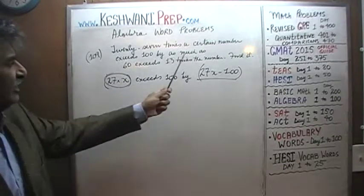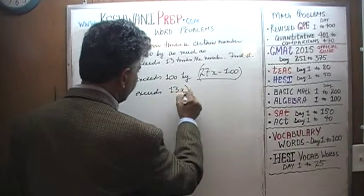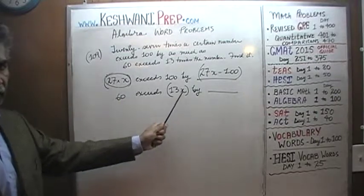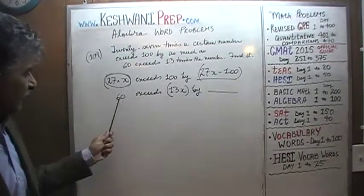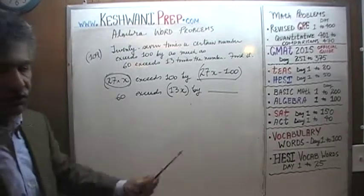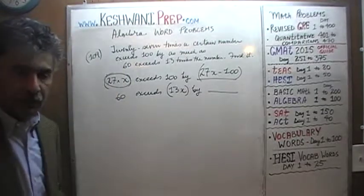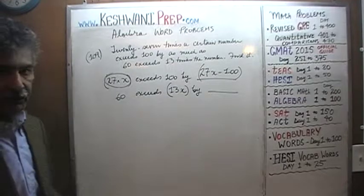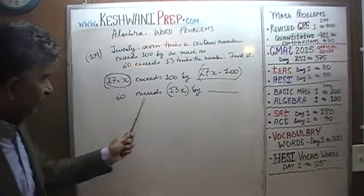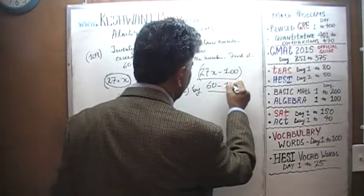The second part: 60 exceeds 13X. Think of 13X as a number less than 60. If 60 exceeds 57 by 3 — found by 60 minus 57 — and 60 exceeds 20 by 40 — found by 60 minus 20 — then similarly, 60 exceeds 13X by 60 minus 13X. That's it.